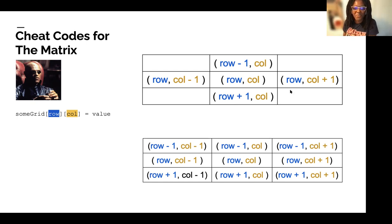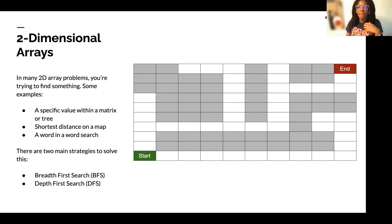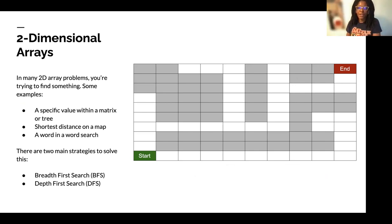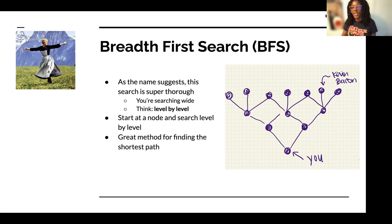In many 2D array problems you're going to be finding something or traversing something — a specific value, the shortest distance, all elements matching a value. When traversing a 2D array there are two main strategies: breadth-first search and depth-first search. Breadth-first search is like Julie Andrews in The Sound of Music — arms out wide. It's a very thorough way of finding a value, searching as wide as you can until you find that specific value.